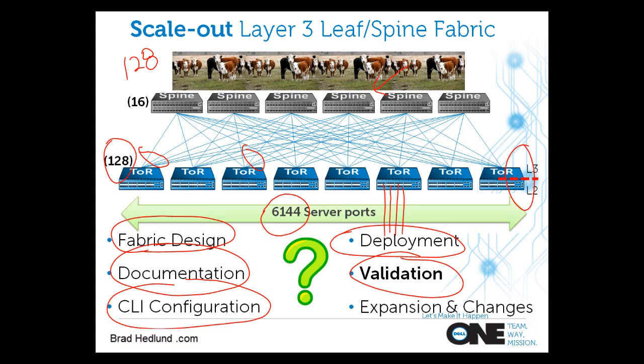And when you go to expand the fabric — add two or four more leaf switches — you can't just validate those new switches. You've made a change to the fabric, so you have to re-validate the entire fabric again. Who's going to update the Visio drawing, update the Excel wiring matrix, and check every single configuration? These are the common challenges customers face deploying any kind of fabric.